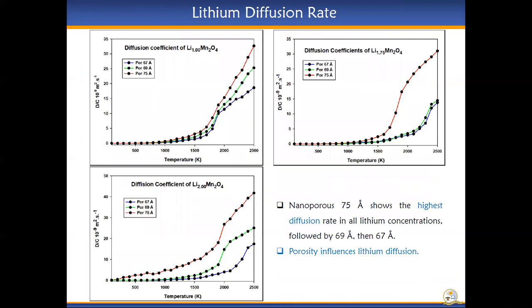The diffusion rate of the structures is observed to be higher for nanoporous 75 followed by 69 than 67 for all concentrations, indicating that porosity of materials influences their diffusion rate.